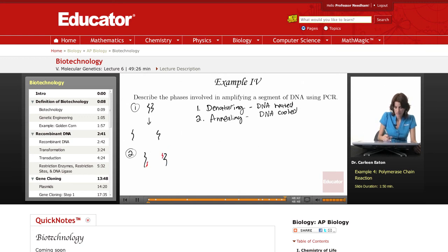And then the elongation or extension phase. This is warm, because it's heated up warmer than the annealing phase, but it's not as hot as the denaturing phase. Taq polymerase will use the nucleotides that we've added to elongate the primer.